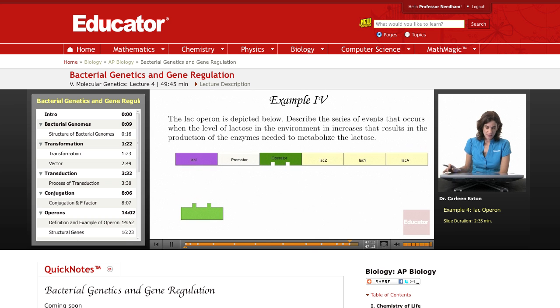The lac operon is depicted below. Describe the series of events that occurs when the level of lactose in the environment increases that results in the production of the enzymes needed to metabolize lactose.